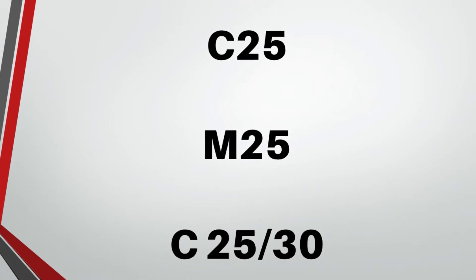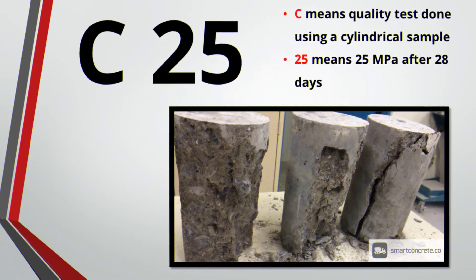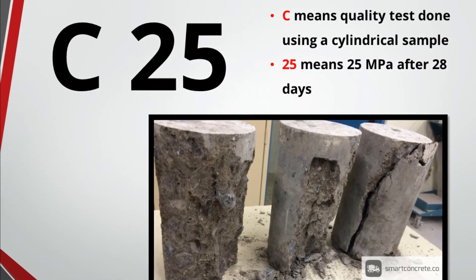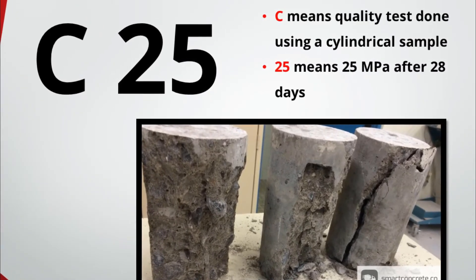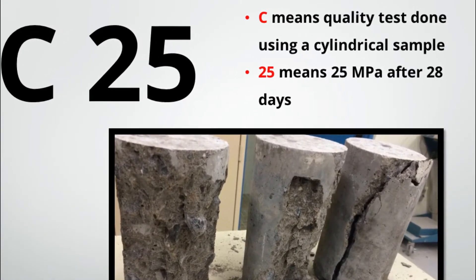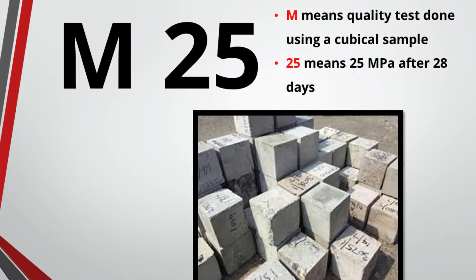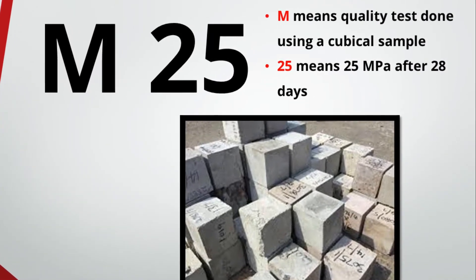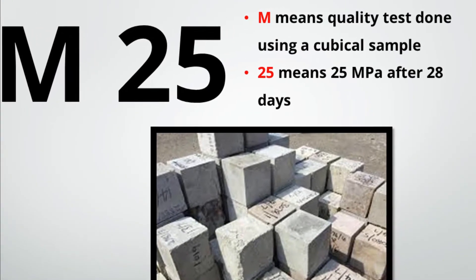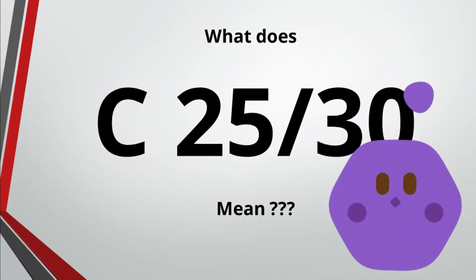To explain C25 and M25: C25 means the quality control is done using a cylindrical sample, and after 28 days the minimum compressive strength must be 25 MPa. M25 means the quality control is done using cubical samples, and the test after 28 days should yield a strength of 25 MPa. The letter prefix tells you which sample shape is used.